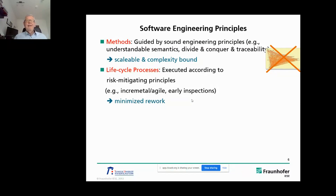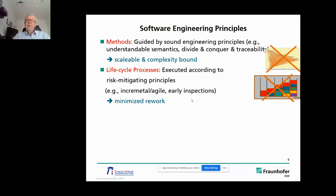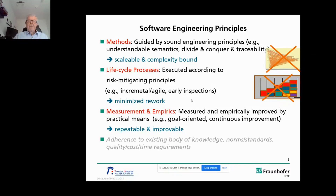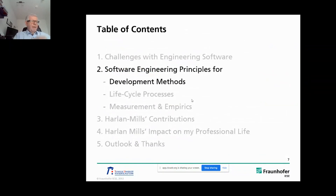The same applies to life cycle processes: they need to be executed according to complexity-mitigating principles. We have approaches like incremental or agile development, and the use of early inspections — all aimed at minimizing rework, so we don't have requirements defects found in red all the way through the development cycle until the very end, which is very costly. And finally, for measurement and empirics, we need to make sure people understand why we collect data — that's goal orientation — and that we are able to create repeatable processes by means of continuous improvement.